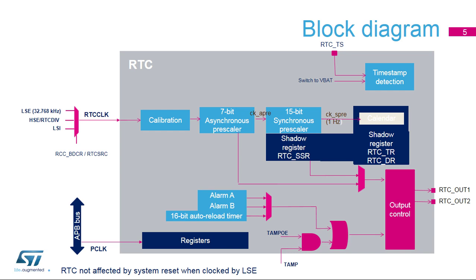This feature is not available in standby, shutdown, and VBAT modes. A timestamp function is available. The calendar values — RTC SSR sub-seconds register, RTC TR time register, and RTC DR date register — are saved in timestamp registers when an IO-RTC TS event occurs. A timestamp event can also occur when a switch to VBAT occurs. In addition, it is possible to timestamp the RTC counters when an internal or external tamper event occurs.